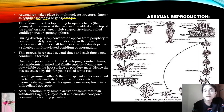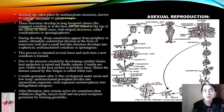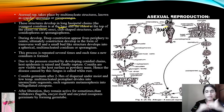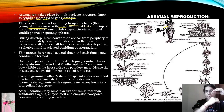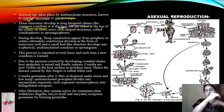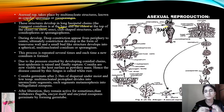The conidia develop on short club-shaped conidiophores. In a basipetal chain, the youngest conidium is at the base. As a chain-like structure forms, the newer conidia are at the base and the oldest are at the top. This is the basipetal pattern of conidia development.